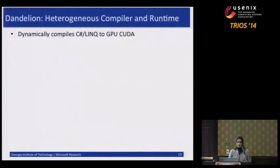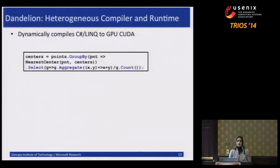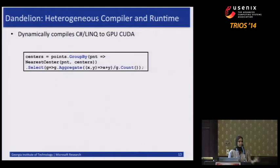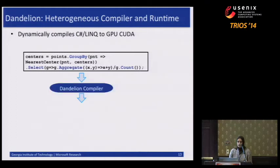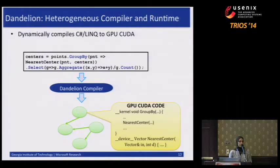In Dandelion, you write your high-level LINQ query without worrying about whether there's a GPU or not. The Dandelion compiler then generates a data flow graph, and for each node generates the corresponding GPU code. This is what Dandelion provides as infrastructure.